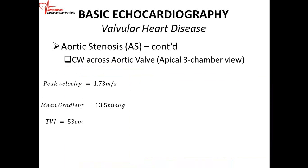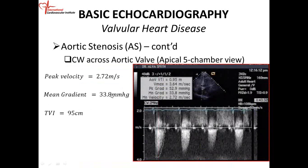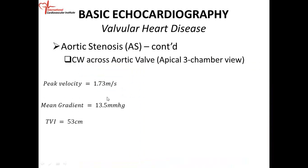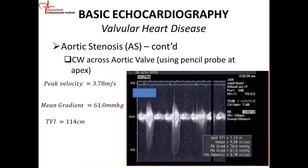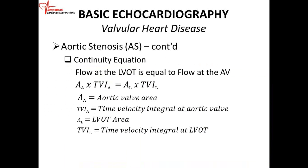For example: the five-chamber view gives a mean gradient of 33.8, the apical three-chamber gives 13.5, and a non-imaging pencil probe gives 61 — all due to angle differences. You must assess from multiple windows. The continuity equation principle: flow across the LVOT equals flow across the aortic valve.